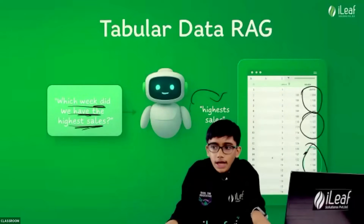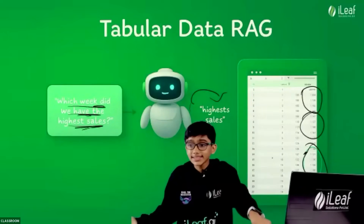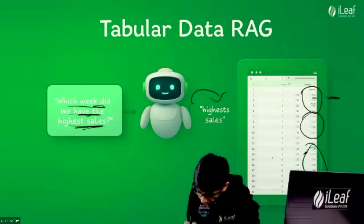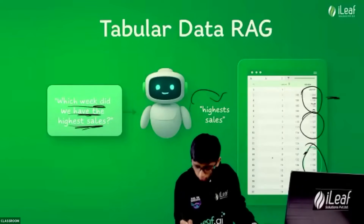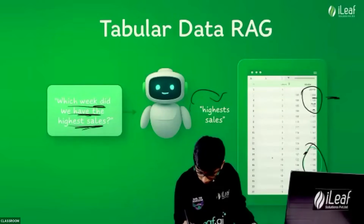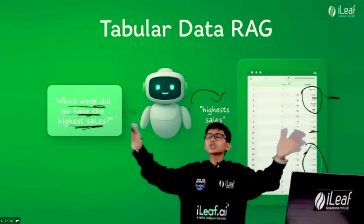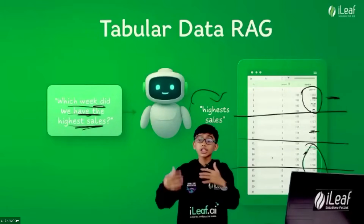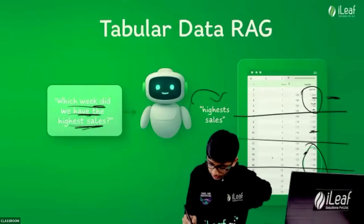Will it know the highest chunk — i.e., the highest sales — if it's only looking at a certain part? If this chunk shows values like 100, 143, but the actual highest sales across the full document is 188, it won't find it. Because it's going through chunks — it converts the full document into small parts — this much, this much, this much.